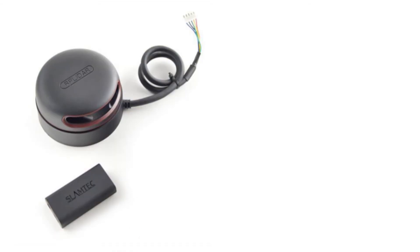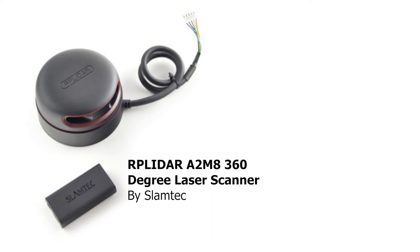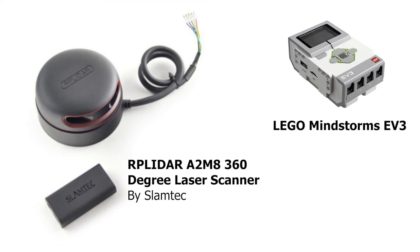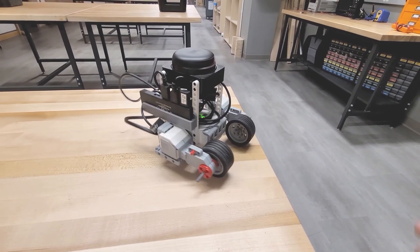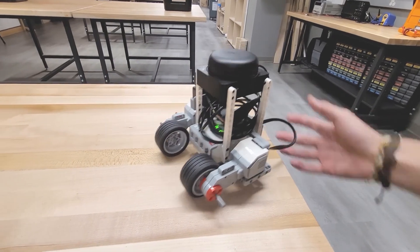While this system is likely possible with a variety of LiDAR sensors, as long as the communication protocols can be established, I've been working primarily with and written custom code for the RP LiDAR A2M8 360-degree laser scanner by Slamtech, which you can find online. The LEGO EV3 Mindstorms is the primary robotics platform I've been using, since it already provides a simple way to control the movement of the LiDAR without having to build a robot from scratch. There are a lot of different possibilities and directions for this system.